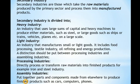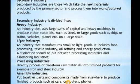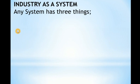Assembly industries put together parts and components made elsewhere to produce finished products such as cars, computers, and phones. In Rwanda, there is a new industry that assembles parts made in Germany to produce complete Volkswagen cars. Apple computers like the MacBook Air and Pro are assembled in the US from parts largely made in China. Similarly, Mara phones is a new industry in Rwanda putting together parts made in China to produce complete smartphones.